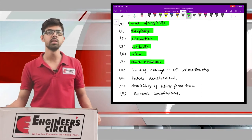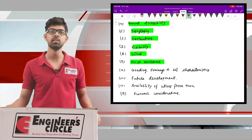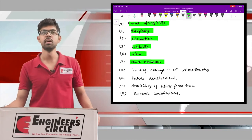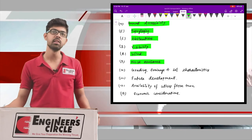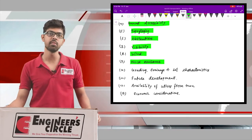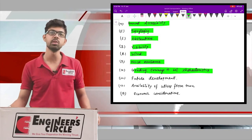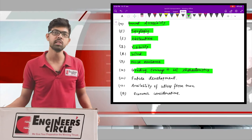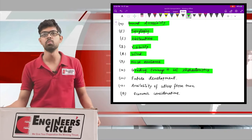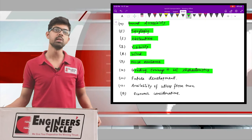Ninth is noise nuisance. Aircraft generate very large amounts of noise that can disturb living organisms, including animals, birds, and nearby residents. Proper noise reduction measures must be in place — noise breakers, thermocole insulation, high-rise boundary walls, and trees planted around the airport. Tenth is grading, drainage, and soil characteristics. The airport site should not be on the downstream side where flooding during rainy seasons is likely. Soil bearing capacity must be sufficient to support the load of fully loaded aircraft.